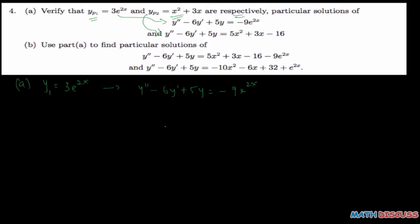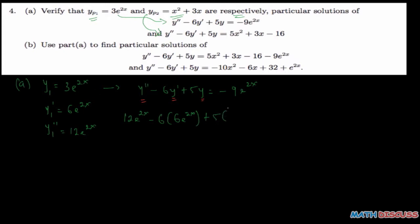To show that, I need to find y, y prime, and y double prime. I already know y, so I need to find y prime and y double prime, and when I substitute all my values I must get negative 9e to the power 2x. So y1 prime, the derivative, is 6e to the power 2x, and y1 double prime is 12e to the power 2x. Making the substitution, we have y'' which is 12e to the power 2x, minus 6 times y prime which is 6e to the power 2x, plus 5 times y which is 3e to the power 2x.